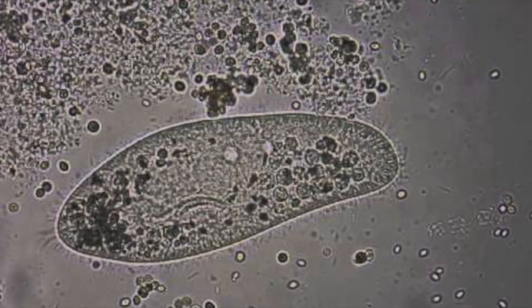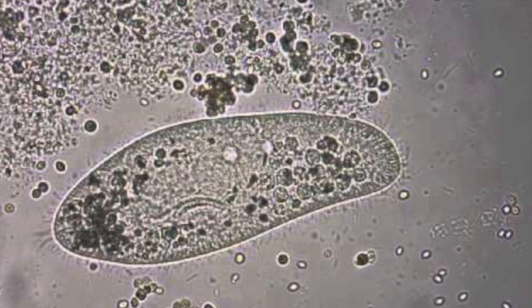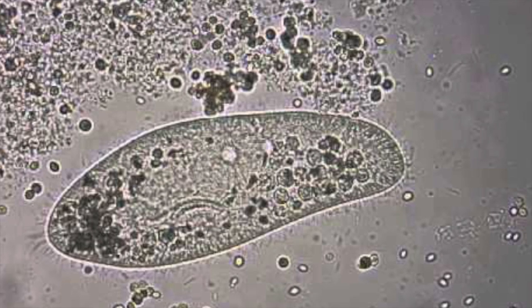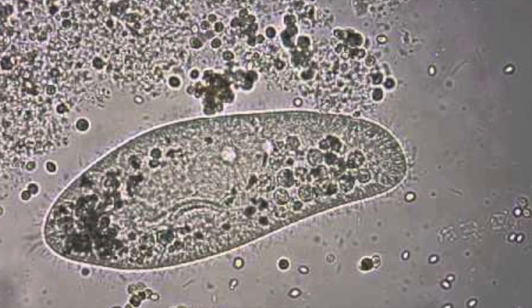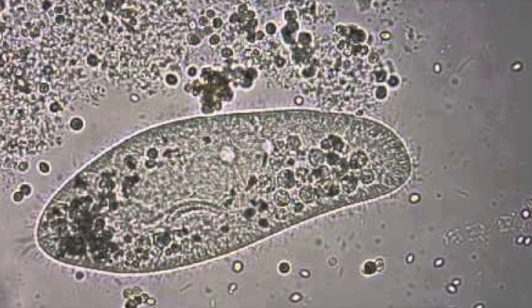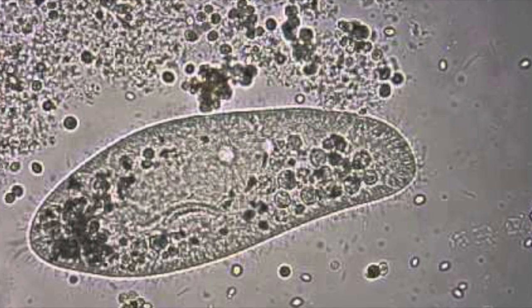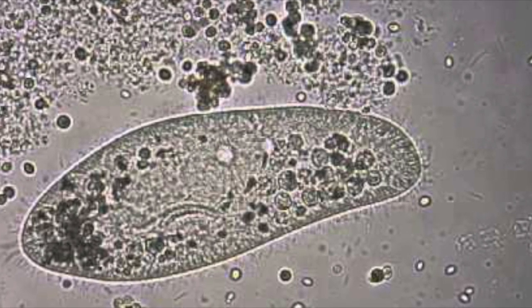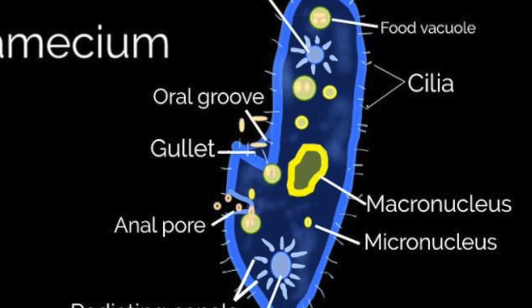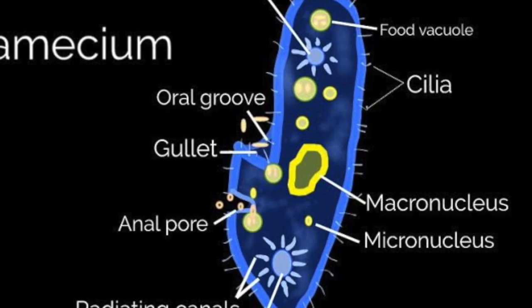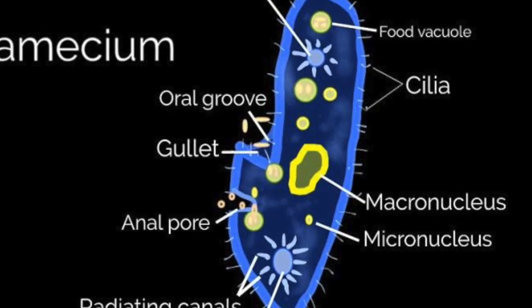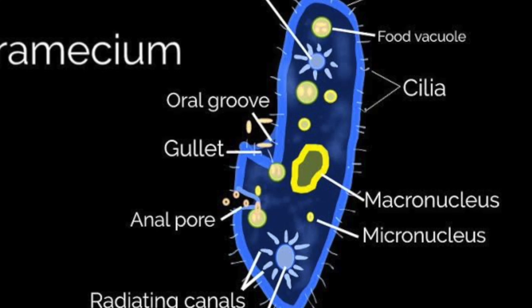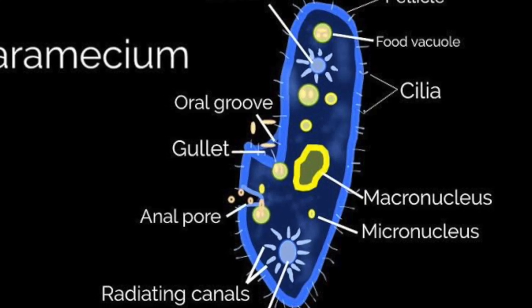The next protist, Paramecium caudatum, commonly known as paramecium, is under phylum Ciliophora. Paramecium are unicellular organisms that commonly feed on bacteria and other microorganisms, such as algae and yeast, through phagocytosis. Paramecium are part of the cilia group because the cilia that covers its body enables it to move or swim around its environment.